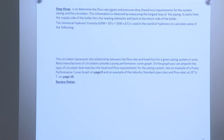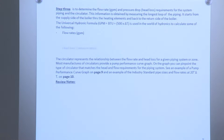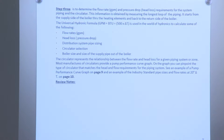Step 3 is to determine the flow rate in GPMs and pressure drop — head loss requirements — for the system piping and the circulator. This information is obtained by measuring the longest loop of the piping, starting from the supply side of the boiler through the heating elements and back to the return side. The universal hydraulic formula — GPM equals BTUs divided by 500 times delta T — is used to calculate flow rates in GPMs, head loss, pressure drop, distribution system piping sizing, circulator selection, boiler size, and size of the supply pipe out of the boiler.